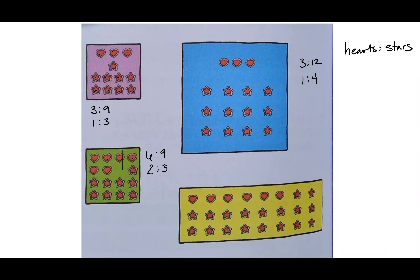How about the yellow sheet? What do you guys have, Mateo? One to three. Great job — you started with six to eighteen and then simplified to one to three.